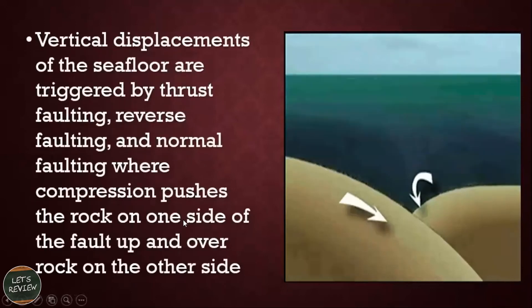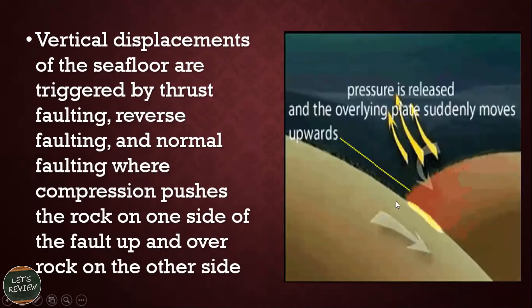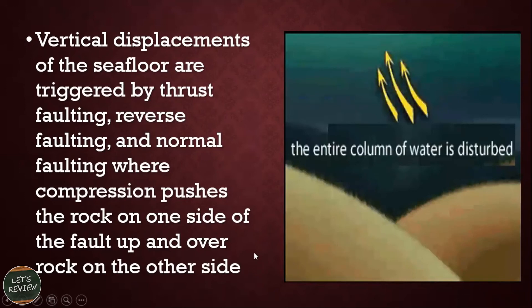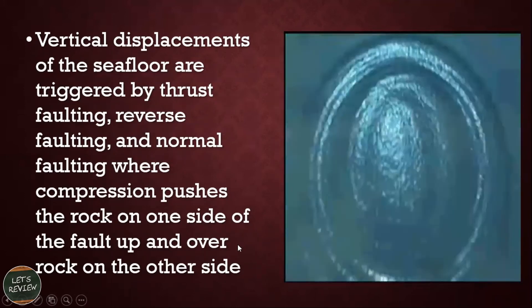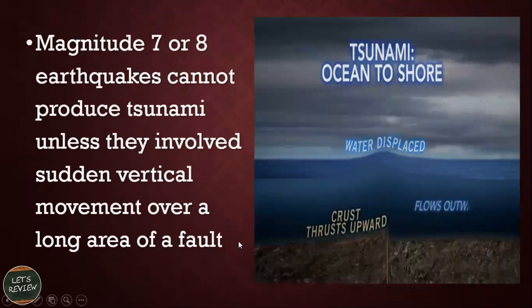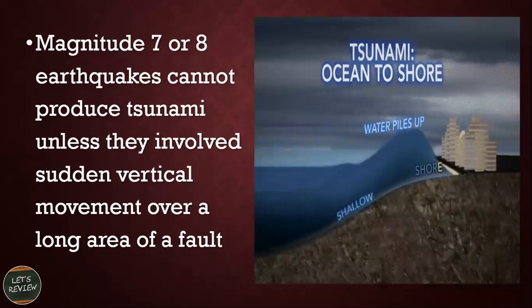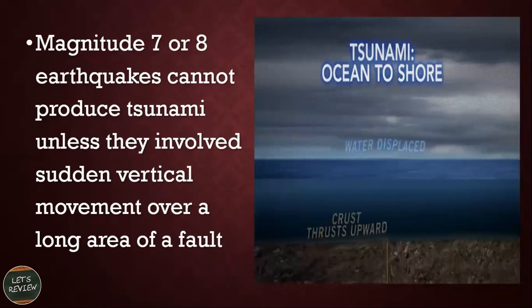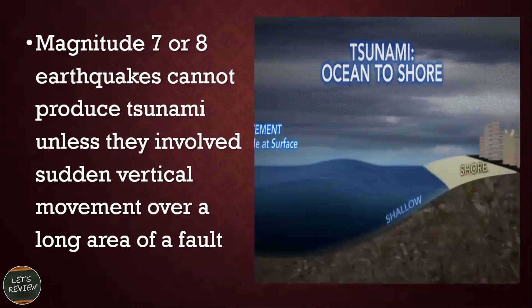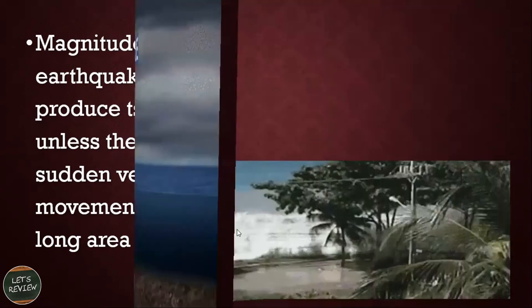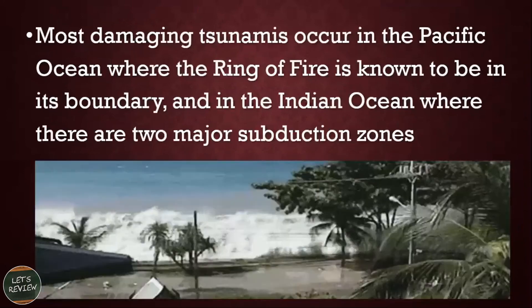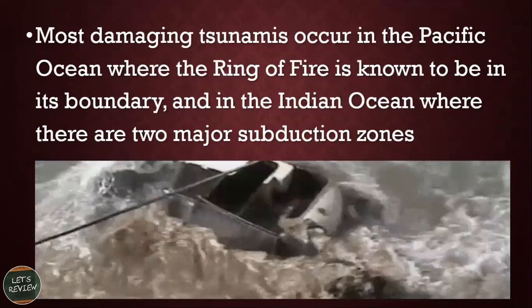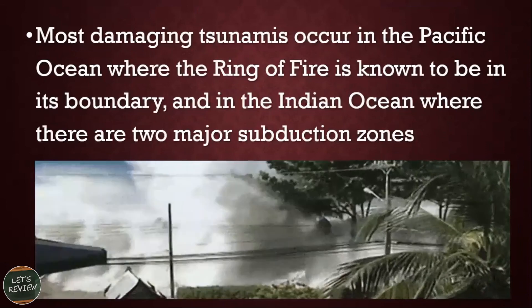The vertical displacement of the seafloor is triggered by thrust faulting — also known as reverse faulting — or transform faulting, or even normal faulting, where compression pushes the rock on one side up and the rock on the other side down. A magnitude 7 or 8 earthquake cannot produce a tsunami unless it involves sudden vertical movement over a long area of a fault. Most damaging tsunamis occur in the Pacific Ocean, where the Ring of Fire is located, and in the Indian Ocean, where there are two major subduction zones.